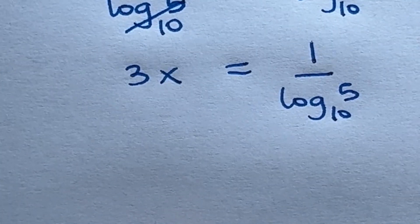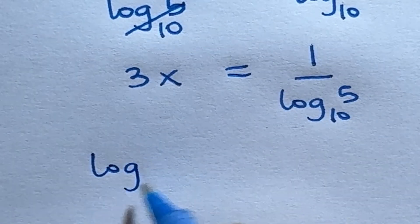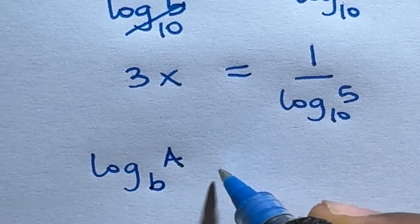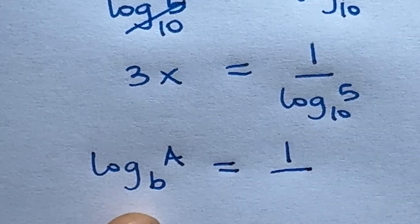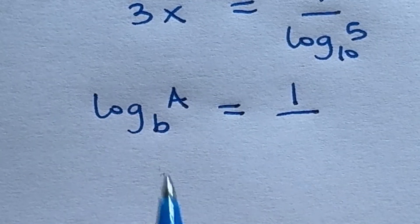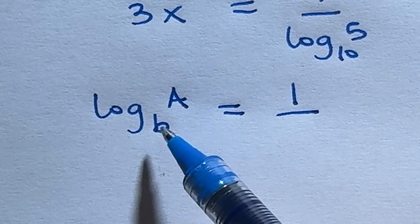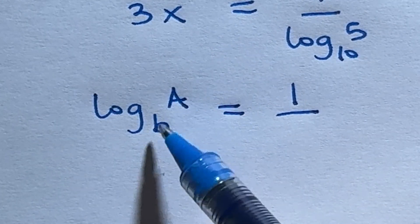According to the law of logarithm, if you have the logarithm of a base b, this can also be expressed as 1 over—you take the reciprocal of the logarithm, but change a here becomes the base, and then whatever is here becomes what used to be here.